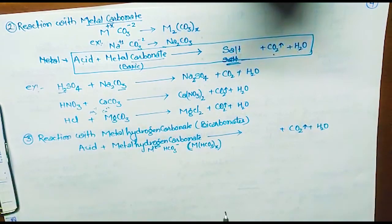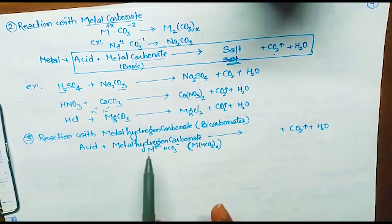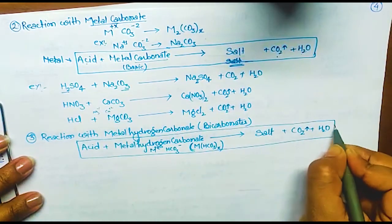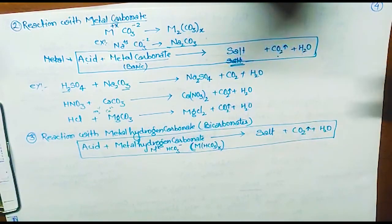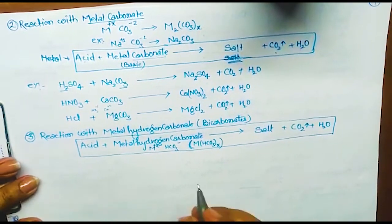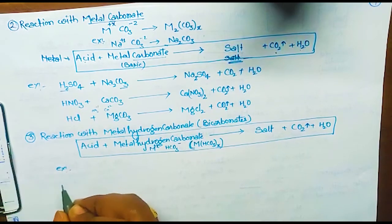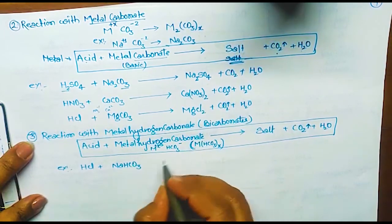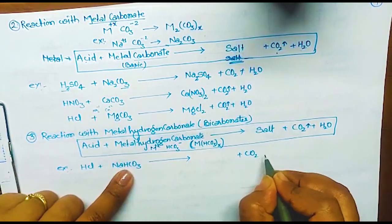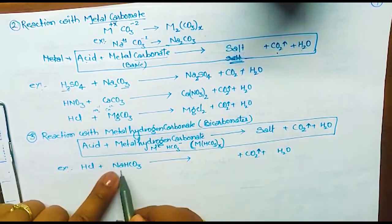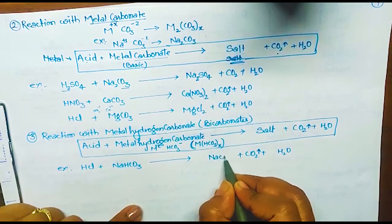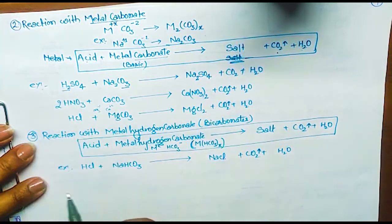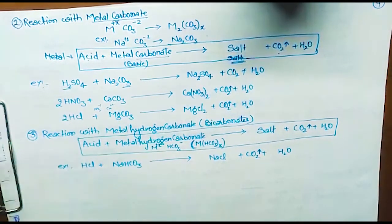Example: HCl reacting with NaHCO3. Carbon dioxide and water are formed for sure. Na is left from NaHCO3 and Cl is left from HCl, so NaCl is formed. If needed, balance the equation — for instance, by adding a coefficient of 2.